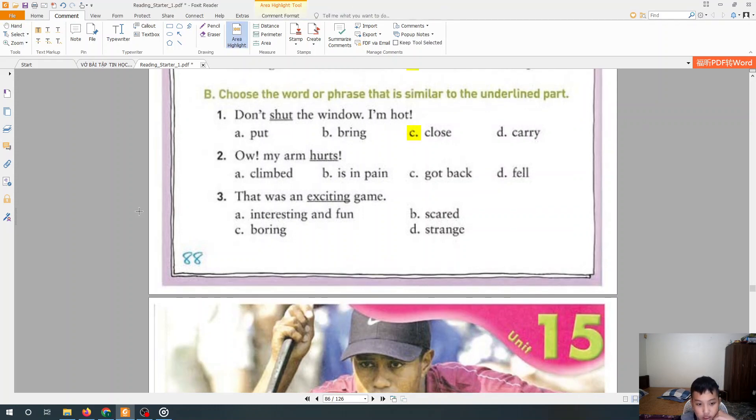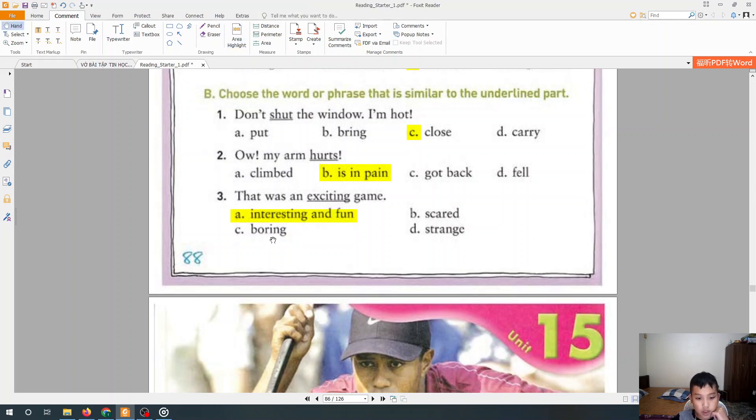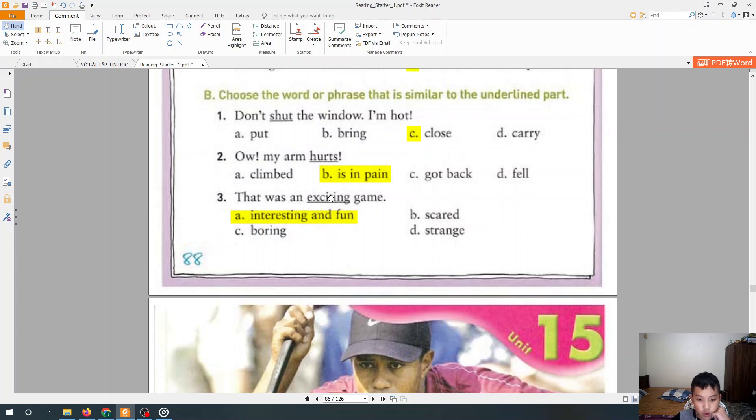Next sentence. My arm hurts. Hurt is the same as it's in pain. You know pain is easy. It's the people who is hurting. Next is exciting. Exciting is very interesting and fun. It's in the meaning of this word.